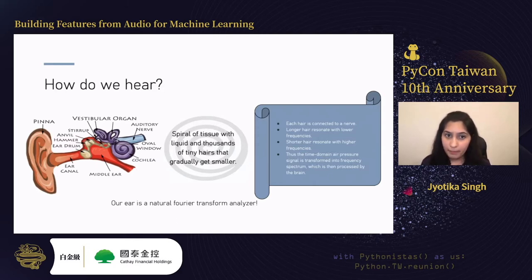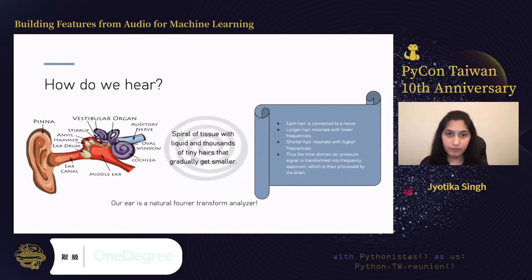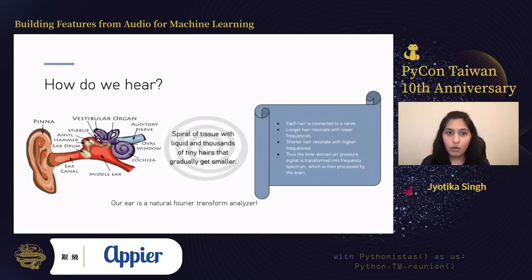The importance of the frequency domain is inspired by biology. The cochlea is a spiral, fluid-filled structure in our ear with thousands of tiny hairs of different lengths. When a sound is received, longer hairs resonate with lower frequencies and shorter hairs resonate with higher frequencies. Time-domain air pressure signals are transformed into a frequency spectrum, which is then processed by the brain. Our ear is essentially a natural Fourier transform analyzer, and the transformations we do computationally are inspired by this biology.